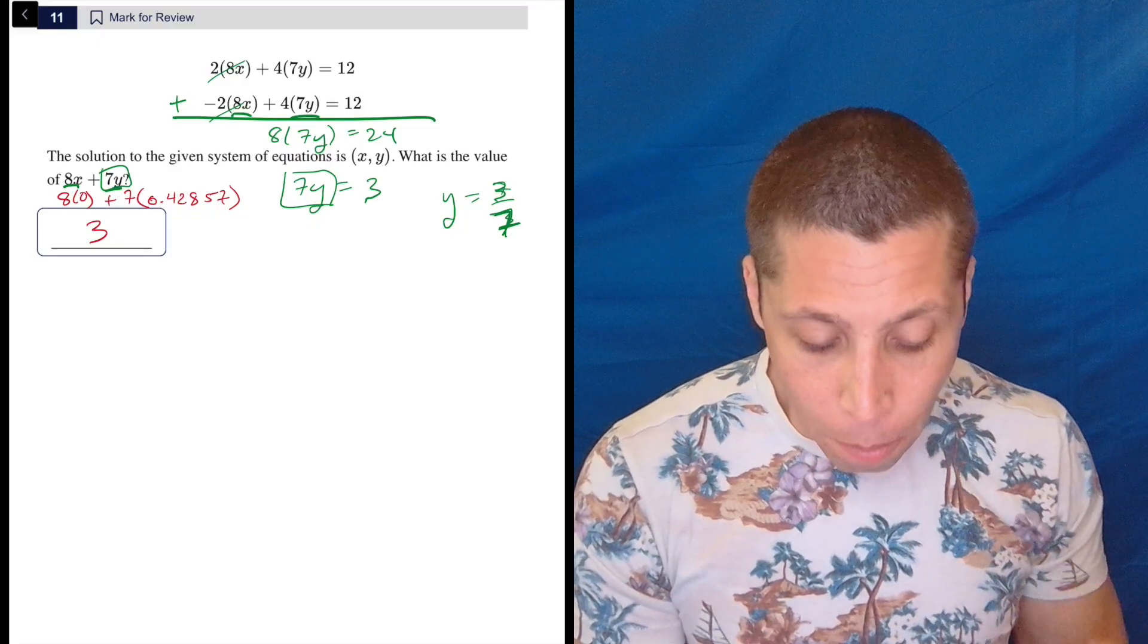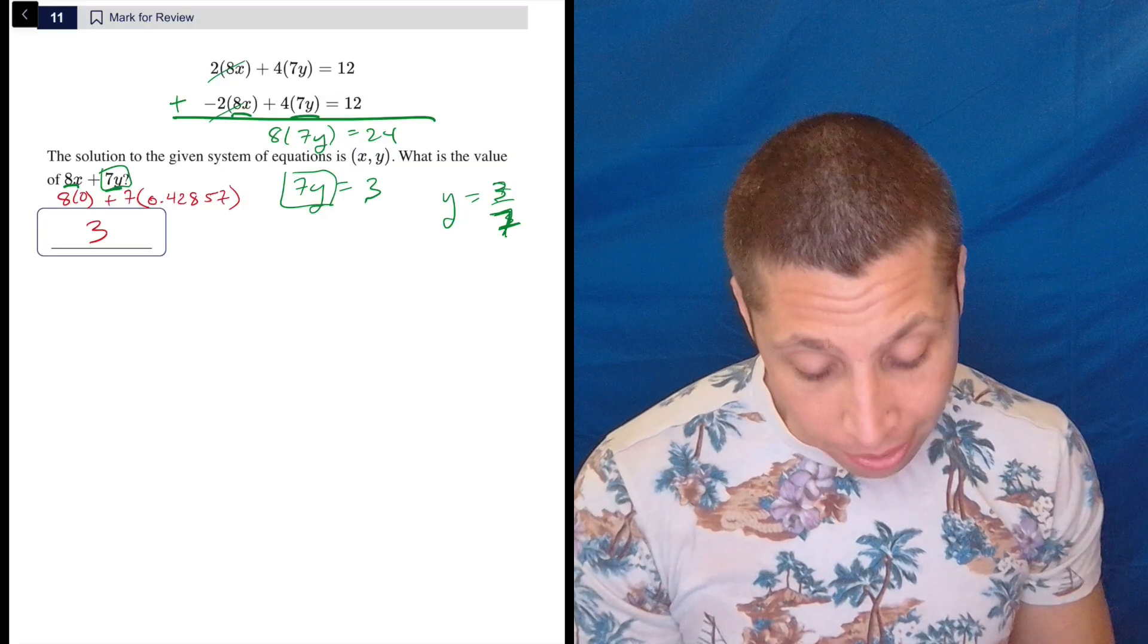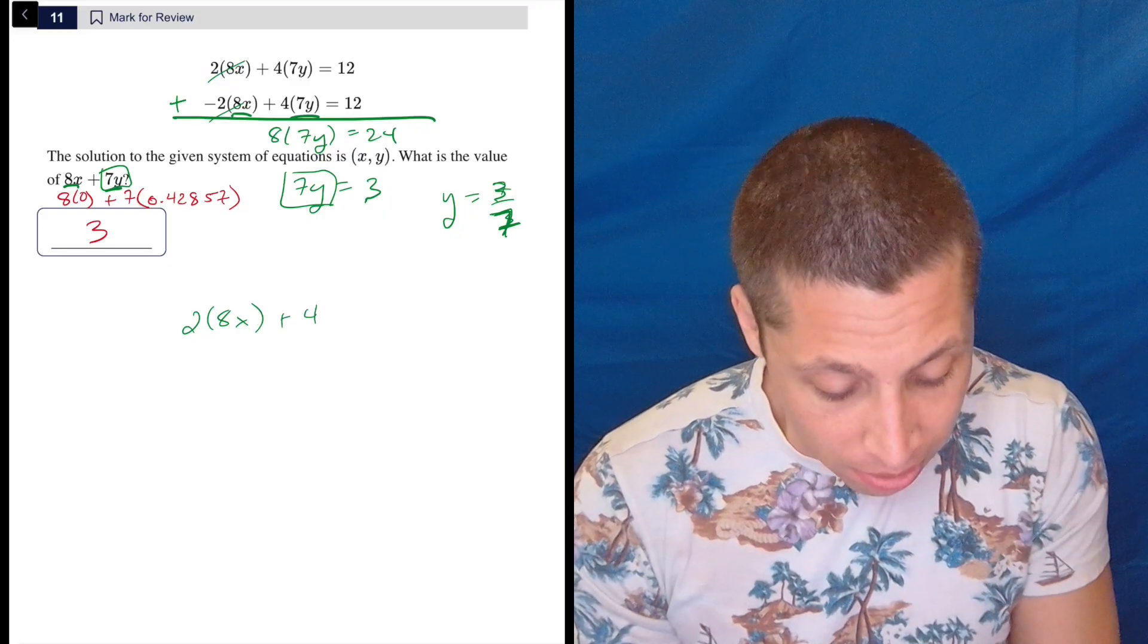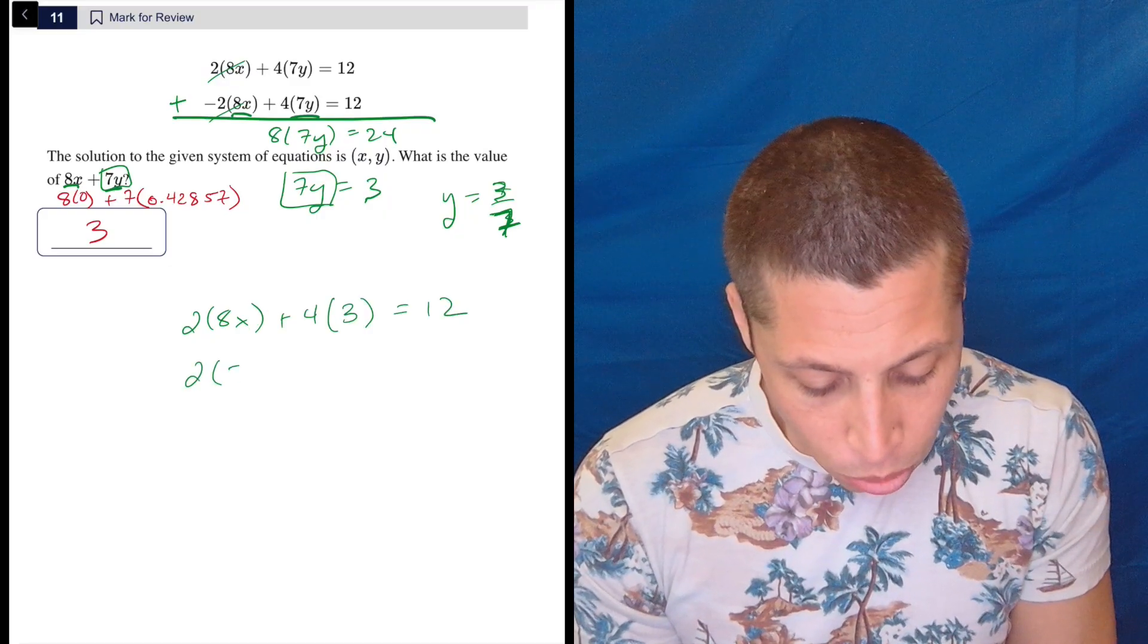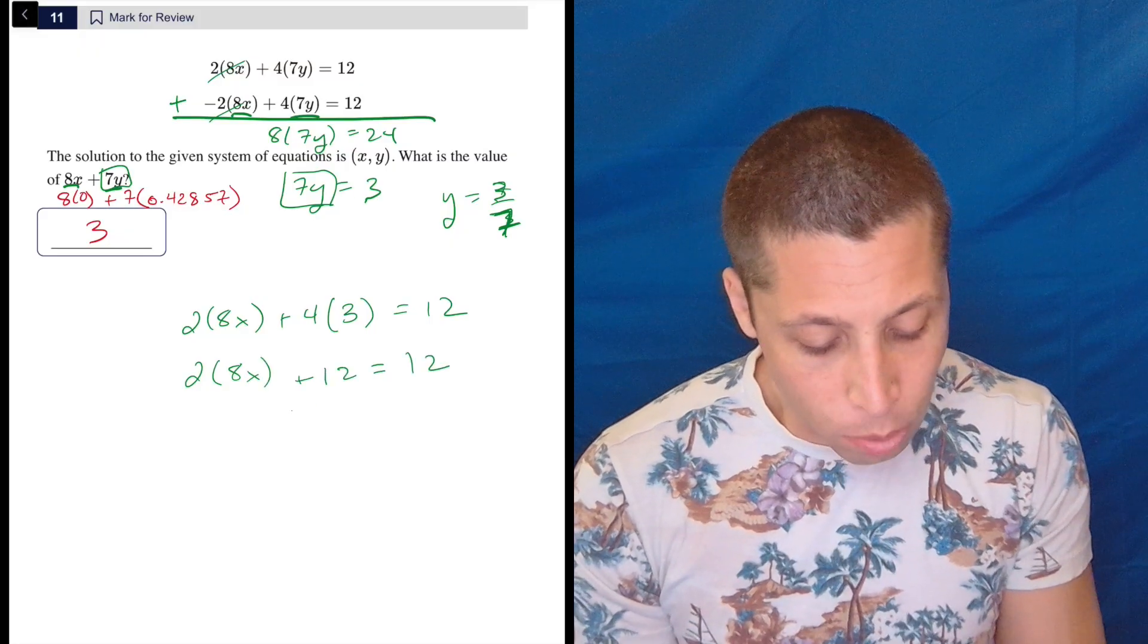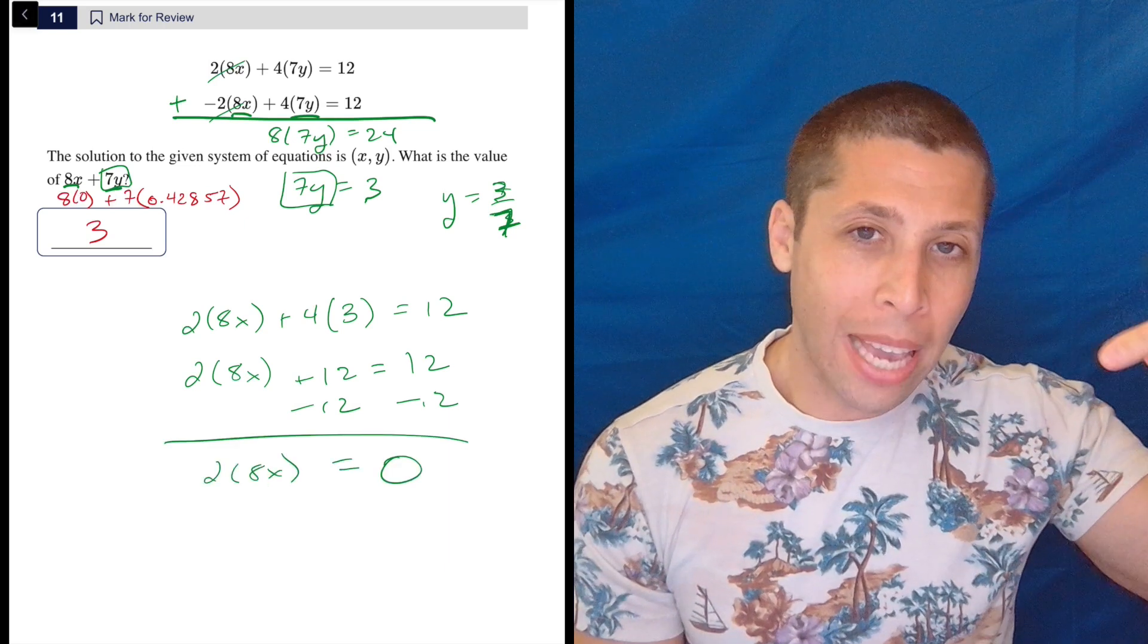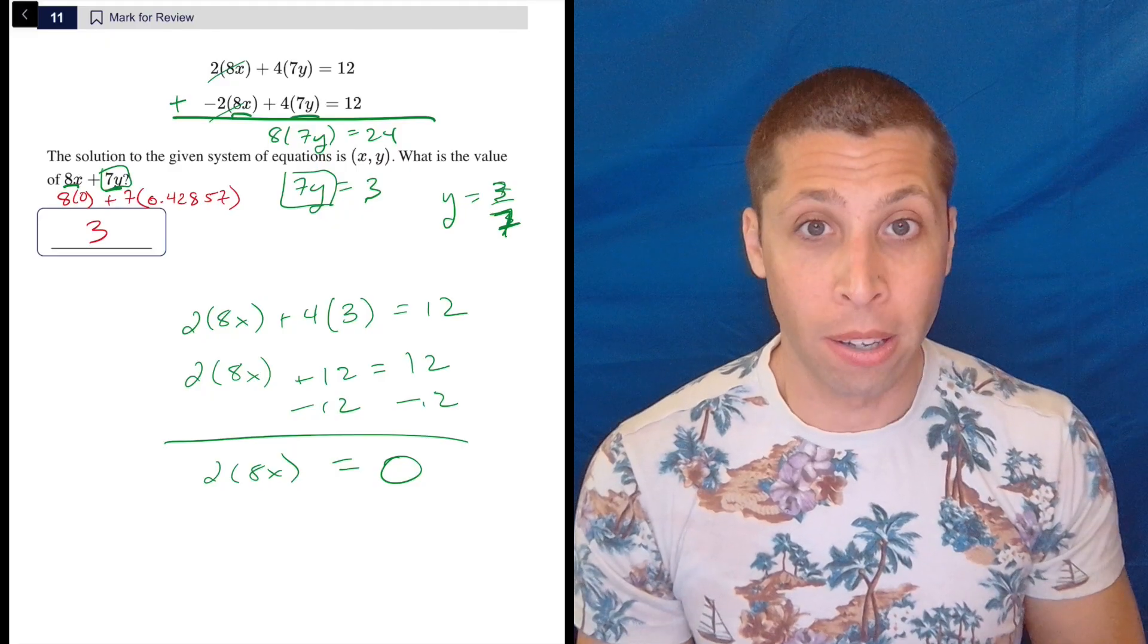But now I would technically need to go back to one of these equations, plug in the 7y or the 3 sevenths, and then solve for x. But again, I don't want x, I want 8x. So let's just do the top equation. 2 times 8x plus 4 times 7y, which is 3, is 12. So 2 times 8x, don't multiply. Keep it as an 8x. Plus 12 is equal to 12. Subtract 12. Subtract 12. And then for whatever reason, when people get like x or y equals 0, they freak out. For some reason, they're like, oh, I must have done something wrong.